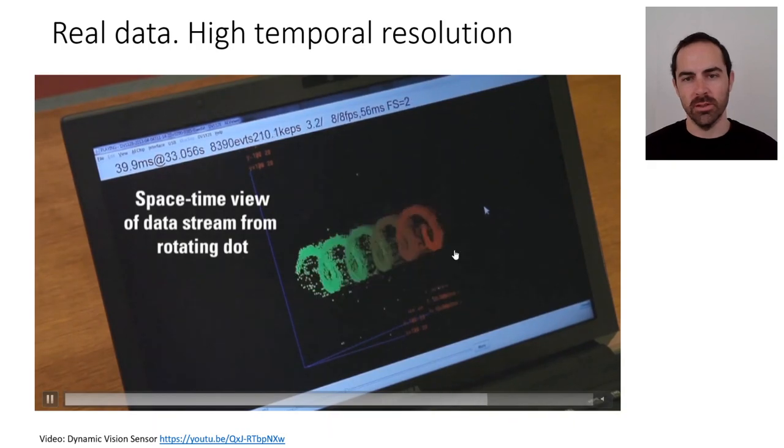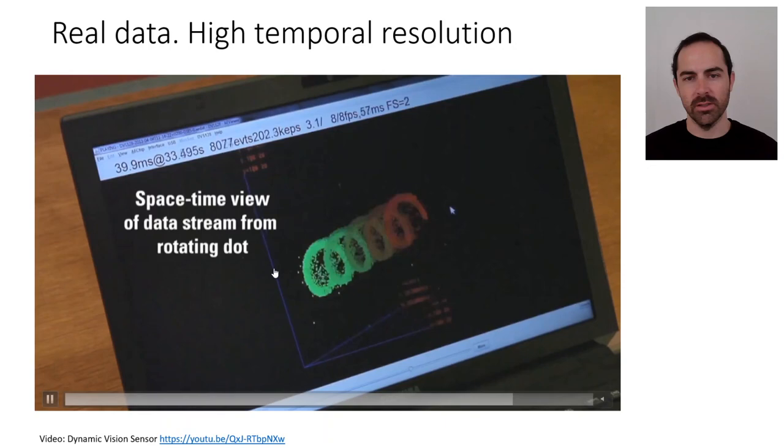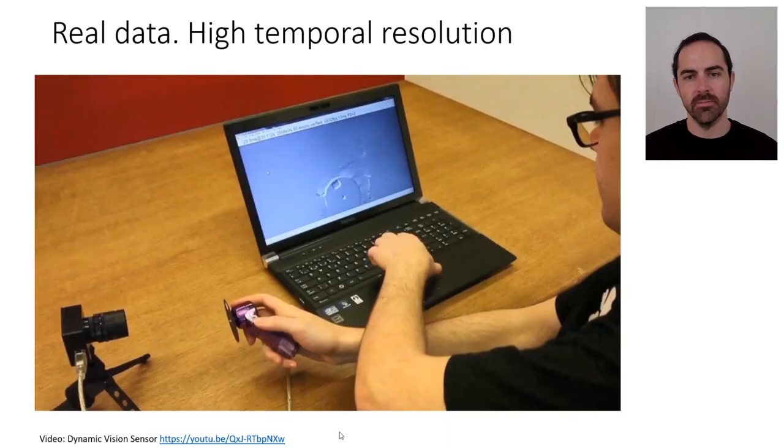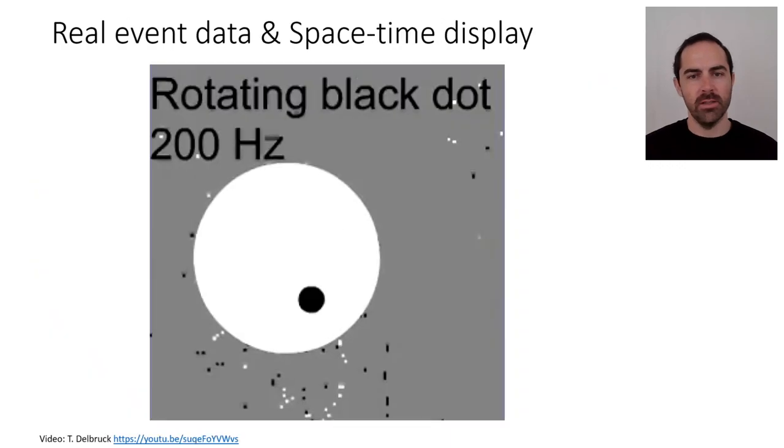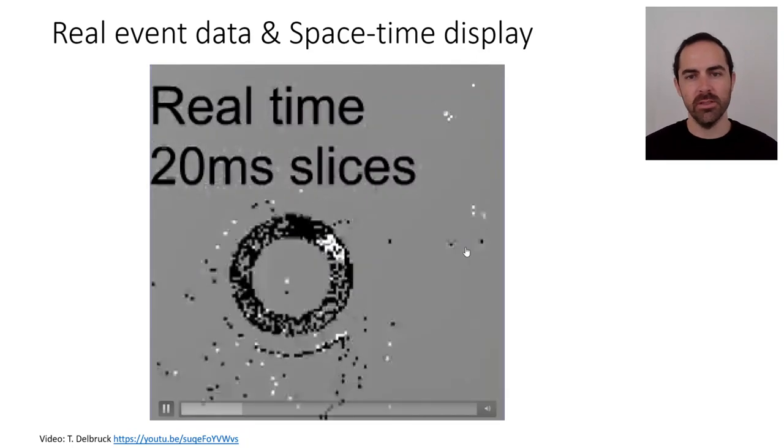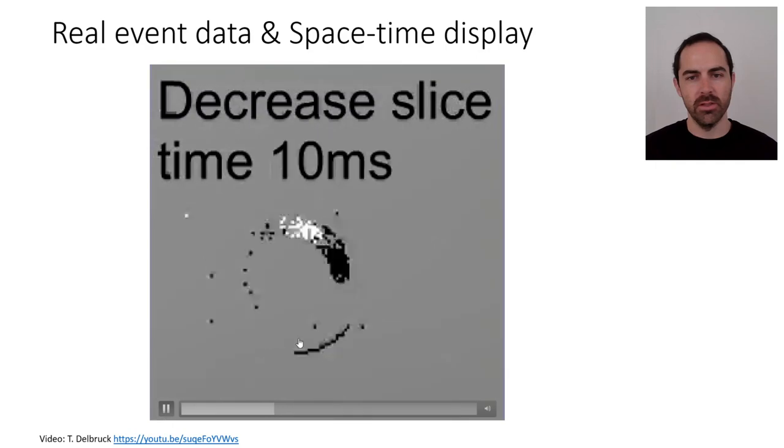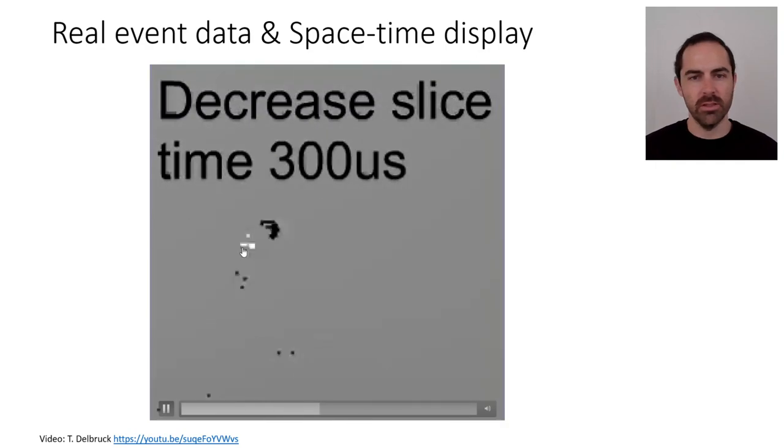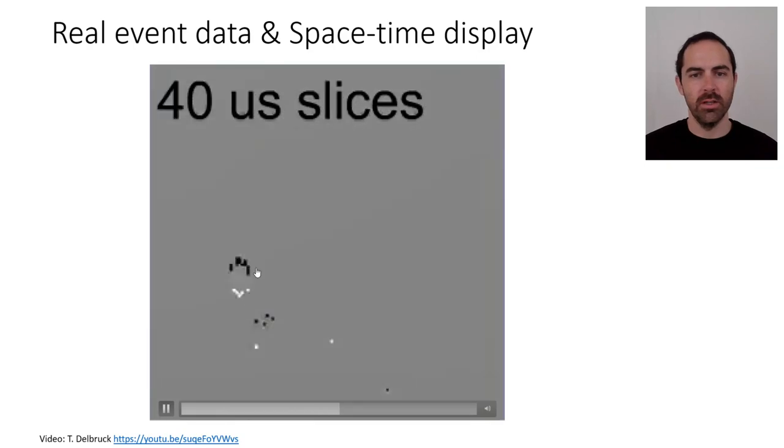You can see the spiral of events as you rotate the x, y, and time axis. This is real data coming from the sensor, the actual data. You see there is still some events from other regions that are noisy. But you can visualize these events and then you can see the front and the back of the dot or the rectangle in this case, with these events in black and white.